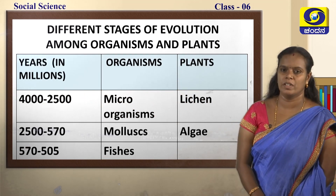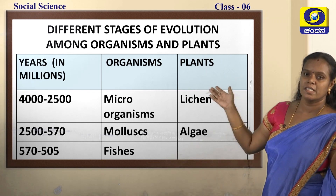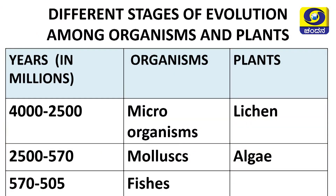Let us see the different stages of evolution among organisms and plants. You can see three columns on the screen: years in millions, organisms, and plants. From 4,000 to 2,500 million years ago, microorganisms evolved, and among plants it was lichen — a kind of fungus that grows on stems or rocks. Between 2,500 and 500 million years ago, molluscs originated. Molluscs are invertebrate animals; examples include starfish and octopus. Among plants, it was algae.